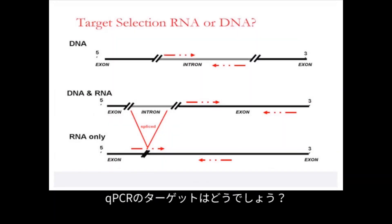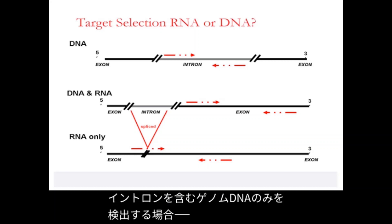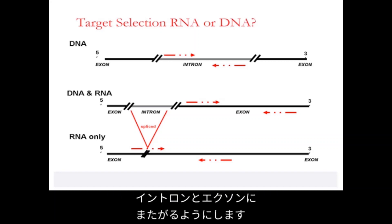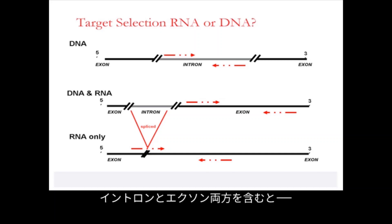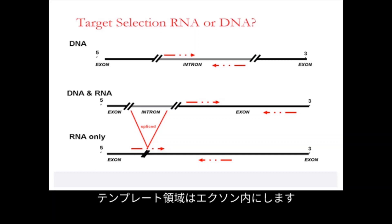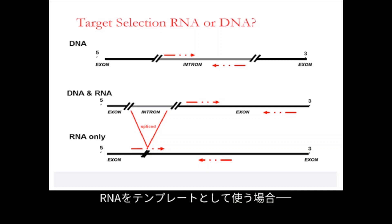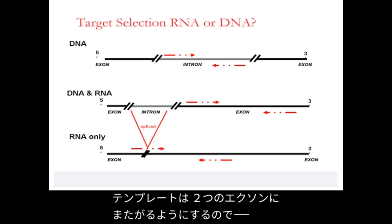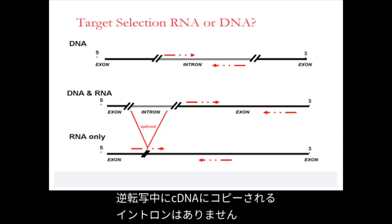Your target in qPCR can be DNA or RNA. If only genomic DNA needs to be detected, which contains introns, the template should span an intron or alternatively span an intron and exon — showing that genomic DNA is being amplified as it contains both introns and exons. If your template is a mixture of DNA and RNA containing both introns and exons, the template region should be within an exon, as these are conserved in both DNA and RNA. If RNA is used as a template in qPCR, one of the primers should be positioned over the exon boundaries, and the template should span two exons, so there are no introns present to be copied into the cDNA during reverse transcription.